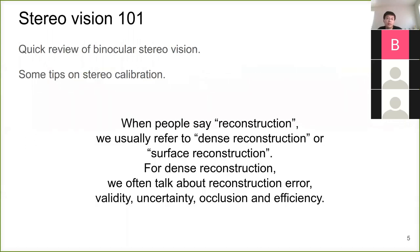For Stereo Vision 101, we'll do a quick review of binocular stereo vision, and I'll give some tips on stereo calibration. When people say reconstruction, we usually refer to dense reconstruction or surface reconstruction. For dense reconstruction, we talk about reconstruction error, validity, uncertainty, occlusion, and efficiency. Everything should be dense — we have to do prediction for every pixel. That is different from sparse reconstruction, like what people normally do for visual geometry and SLAM, where they use reliable robust features. But for us, we have to do dense reconstruction.